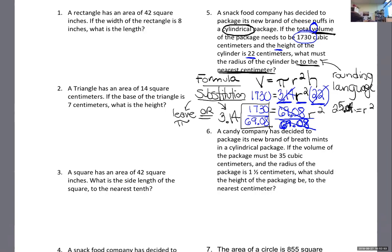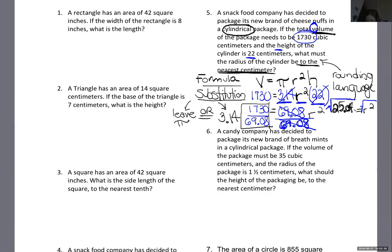R is almost alone, but I have to get rid of the square. The opposite of squaring is square root. I'll take the square root of both sides. On the right, square and square root cancel so R is alone. On the left is the calculator work.